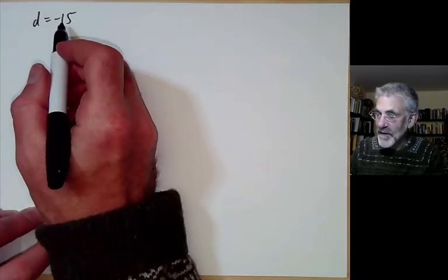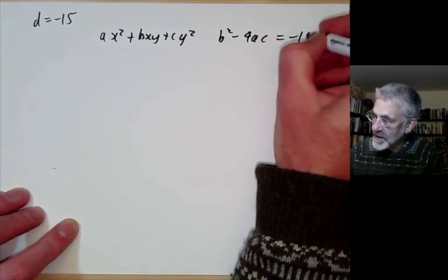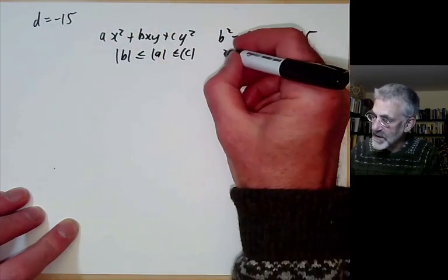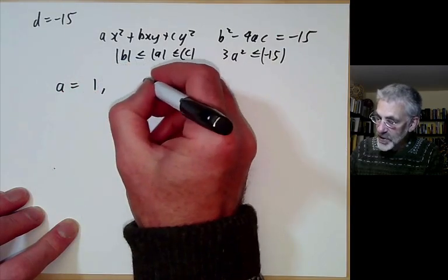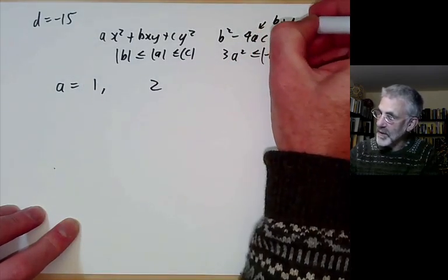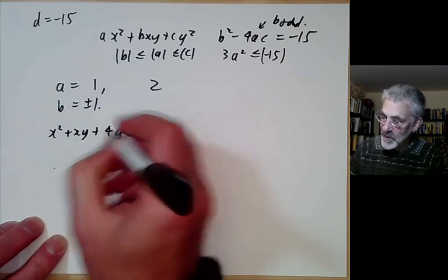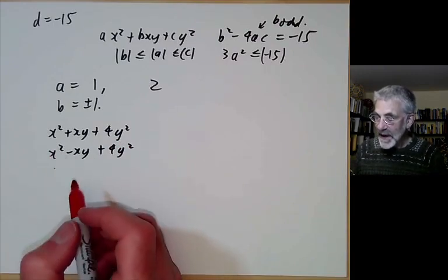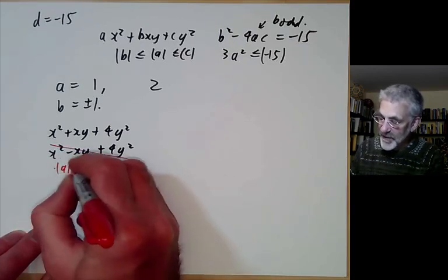Let's first do the case d = -15. We want to find all reduced forms: ax² + bxy + cy² with b² - 4ac = -15, and the reduced condition |b| ≤ a ≤ c. These two conditions for positive definite forms imply 3a² ≤ |d|, giving a = 1 or 2. If a = 1, this condition gives b odd, so b = ±1. We get two forms: x² + xy + 4y² and x² - xy + 4y². Since a and b have the same absolute value we can eliminate the second one.